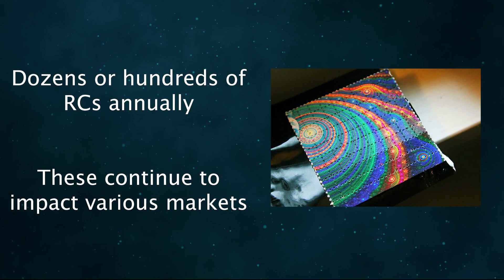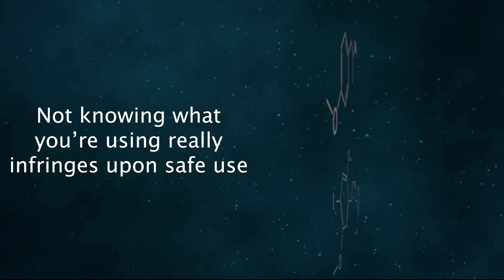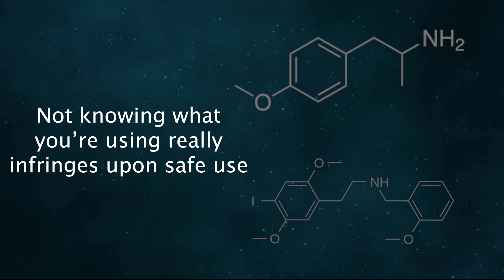There are dozens if not hundreds of research chemicals entering the market each year. Many of them continue to impact the aforementioned markets, and the problem isn't going to disappear without legalization. Some of these drugs, such as PMA, 25I-NBOMe, and certain Cathinones, have caused significant health issues and fatalities. When you don't know what you're taking, it's simply not possible to use the drug in a truly safe way.